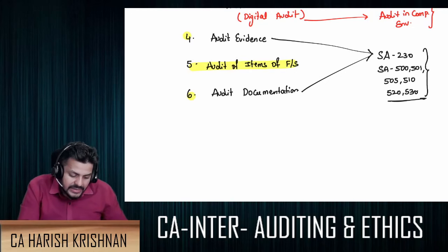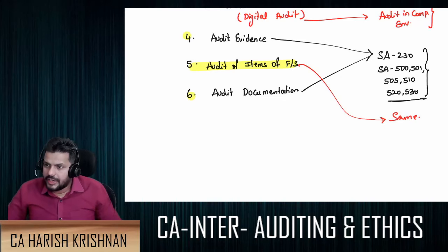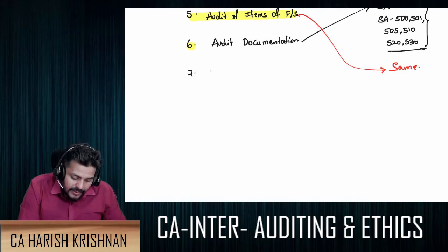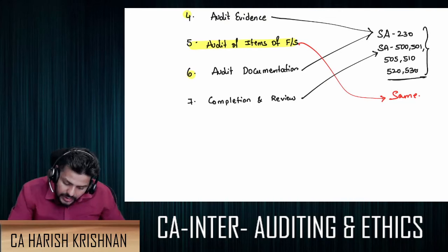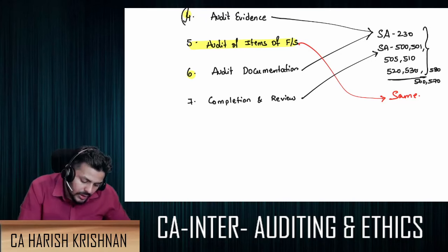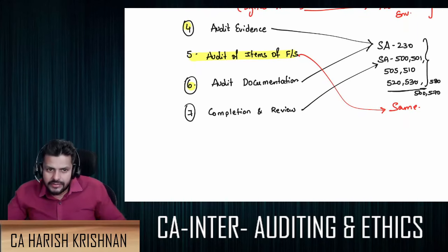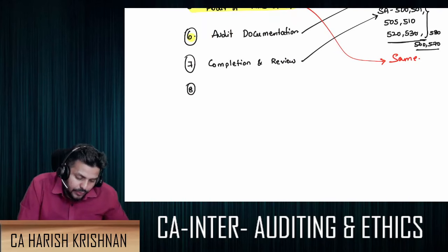Chapter 5 — audit of items of financial statements — is exactly the same with no change; you can use that full material as-is. Chapter number 7 is called completion and review. Certain standards are covered there too, such as SA 560, SA 570, and SA 580. If you map the standard numbers, you can comfortably use your existing material. So chapters 4, 6, and 7 of the new syllabus — whatever standards are there — are very much there in the old syllabus in detail.